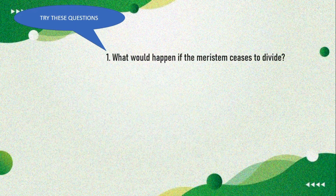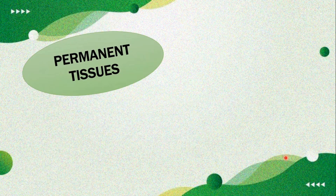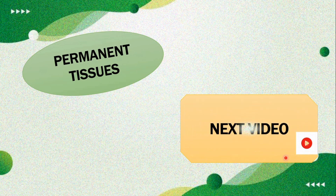Try these questions: What would happen if the meristem ceases to divide? Observe the figure and answer: What does the figure show? Label A, B, and C. Write the function of A and C. Which part is responsible for the increase in growth of the internode? Write your answers in the comment section. We will look at permanent tissues in the upcoming video. If you understood this video, please like, share, and subscribe. Thank you for watching.